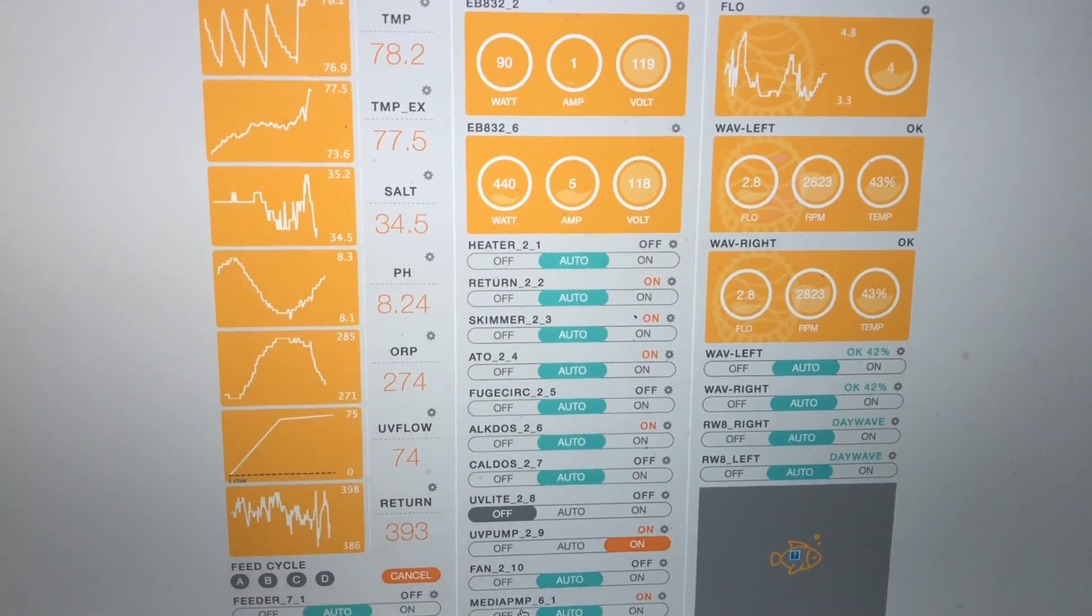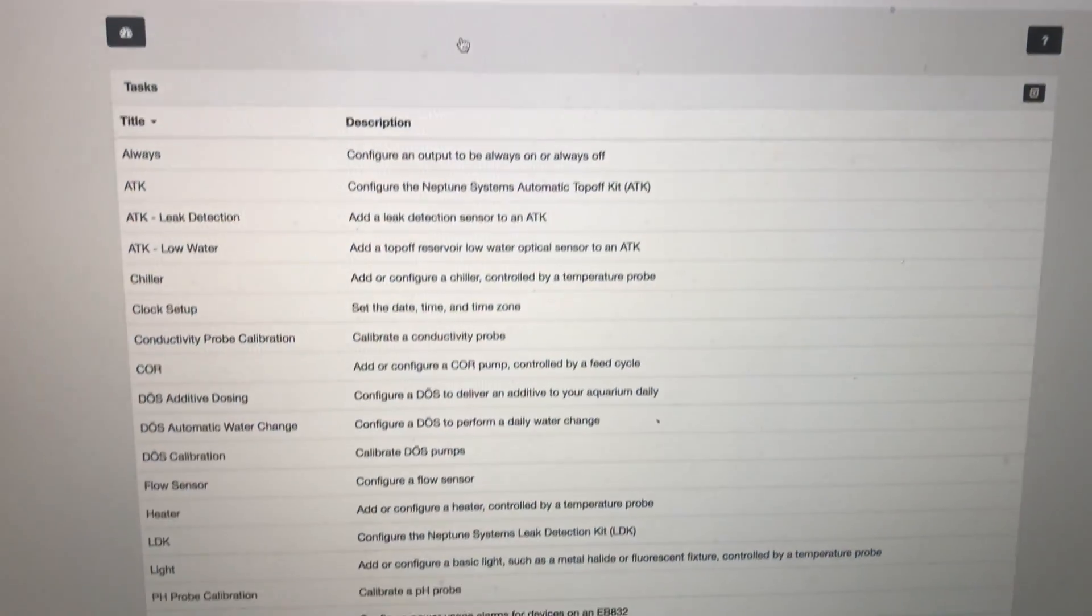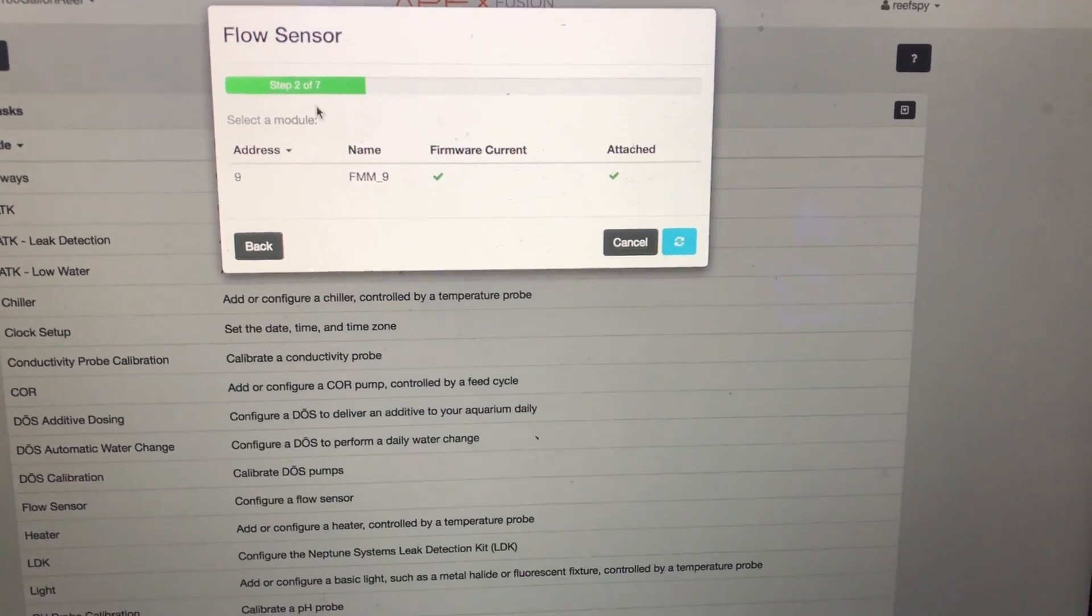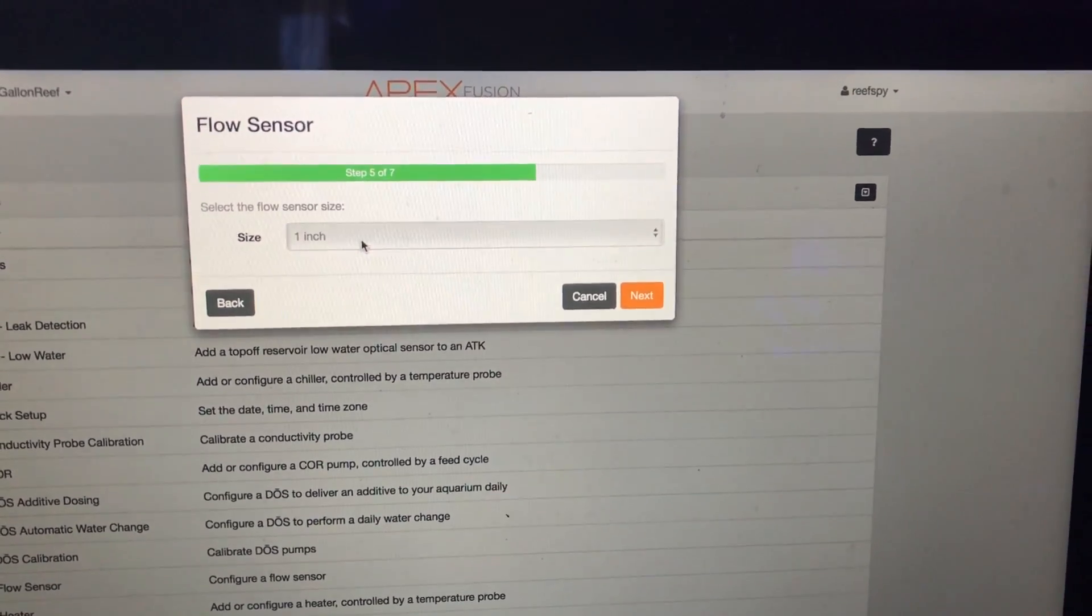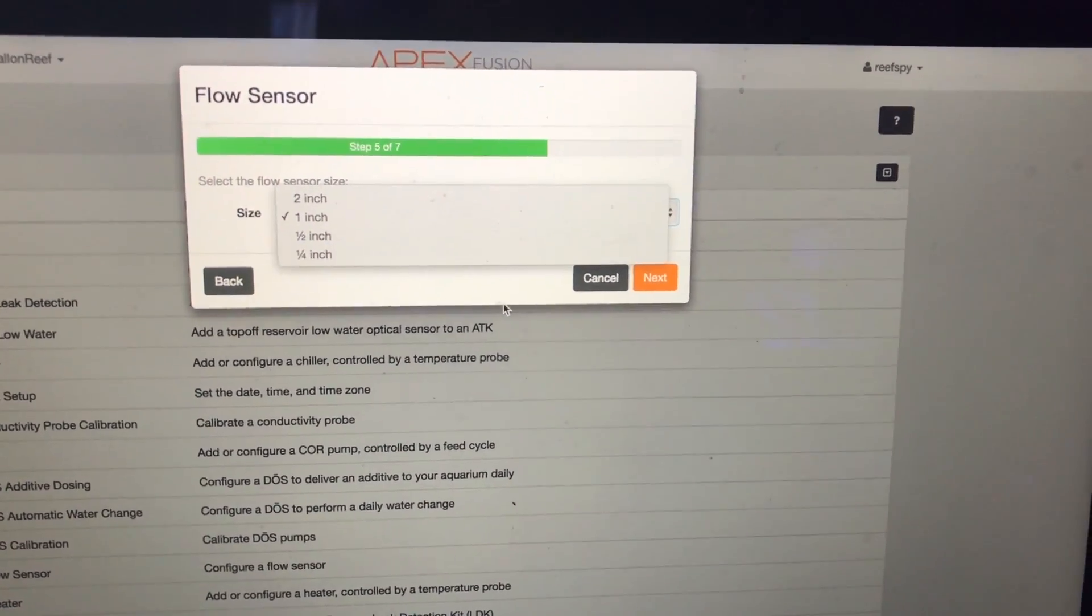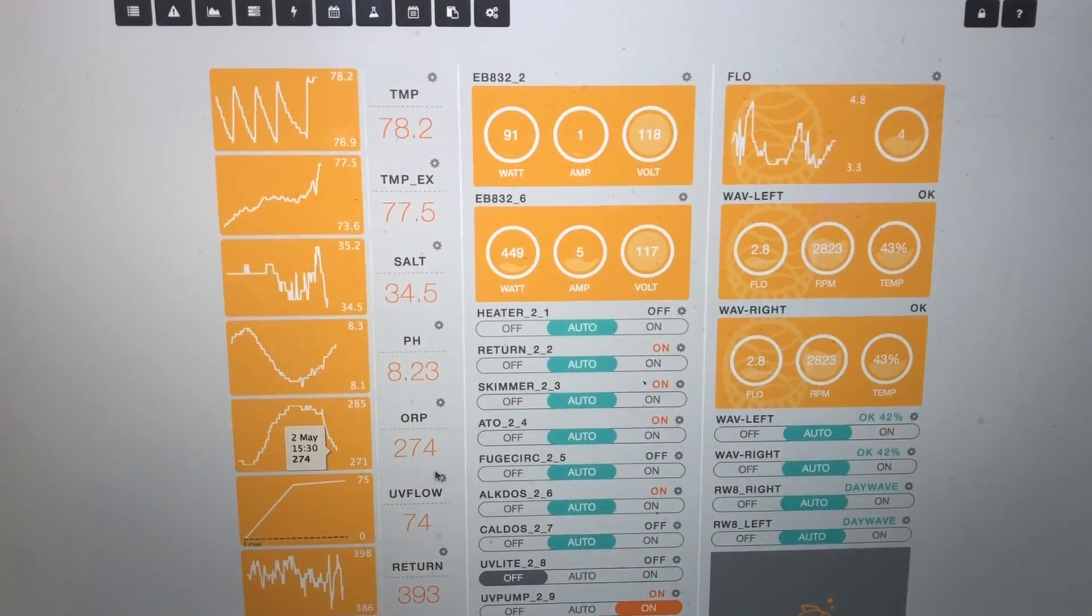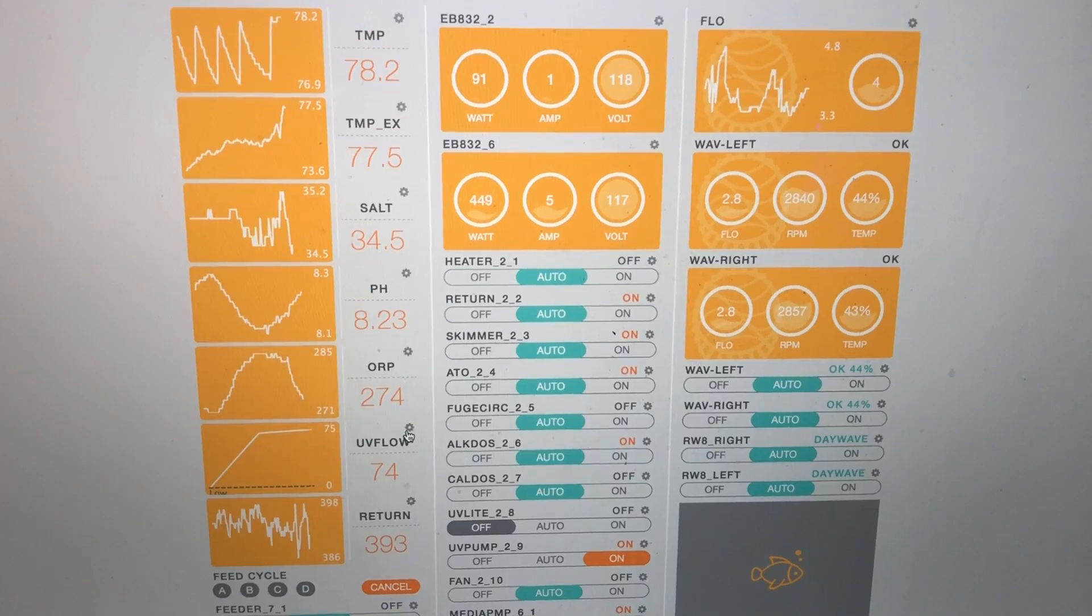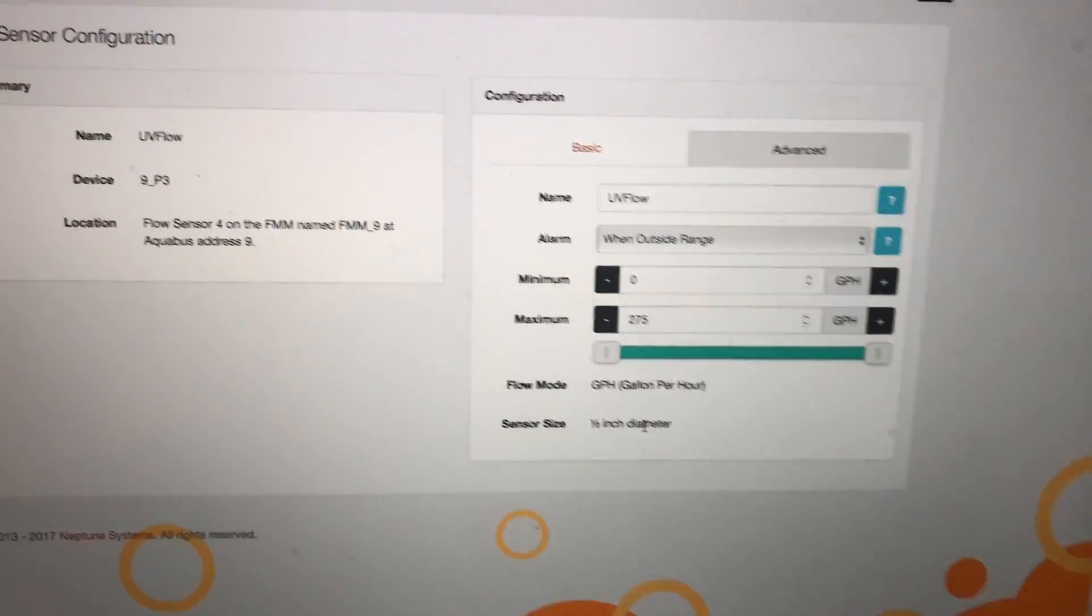I forgot to hit the record button while I changed the sensor size, so let me show you how that's done. You just go up here, they have some wizards or tasks. You hit that, you get on the flow sensor, you hit that, it'll walk you through what you need to do. I've got everything already set up, so I just went to this one and in here you could change it to half inch, which is what I did.